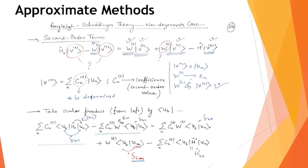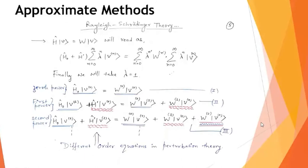In the next part, we go beyond first order and calculate the second-order energy correction. Returning to the three fundamental perturbation equations: the zeroth-order equation is exactly solvable, the first-order equation we have already solved, and now we tackle the third equation—the second-order perturbation theory.